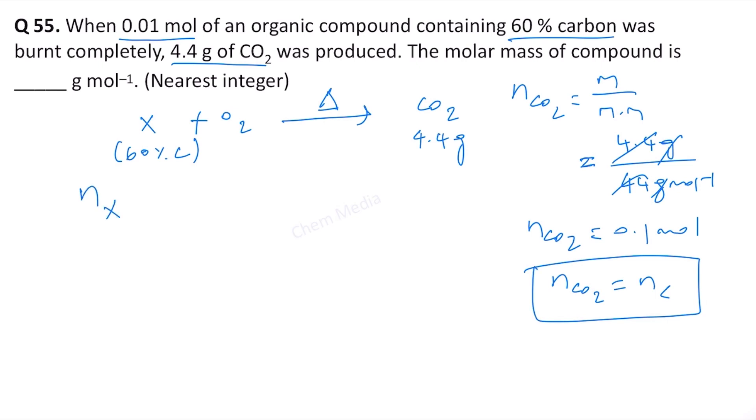Now, number of moles of X is equal to mass of X divided by molar mass of X. The mass of X here is given in an indirect manner. They mentioned it as 60% carbon. Therefore, mass of carbon in X is equal to number of moles of X times molar mass of X times 60 by 100 because whatever is the total mass of X, 60% is carbon. Let us keep it as equation 1.